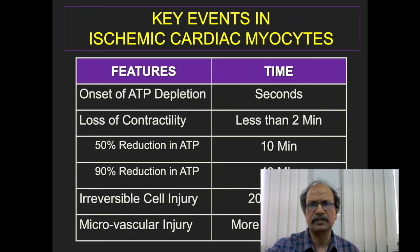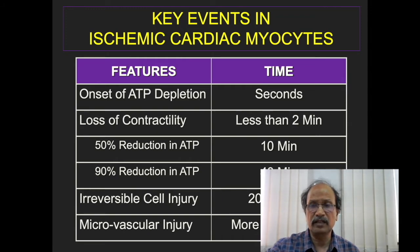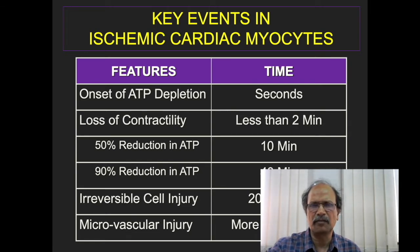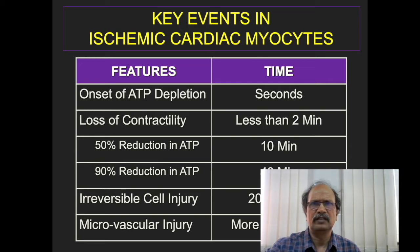With 50% reduction of cellular ATP by 10 minutes and 90% of ATP depleted by 40 minutes, this 40-minute window is very crucial. Irreversible cell injury sets in after 40 minutes. Microvascular injury occurs after more than one hour, which is important because reperfusing damaged myocardium after one hour risks thrombosis due to endothelial damage.